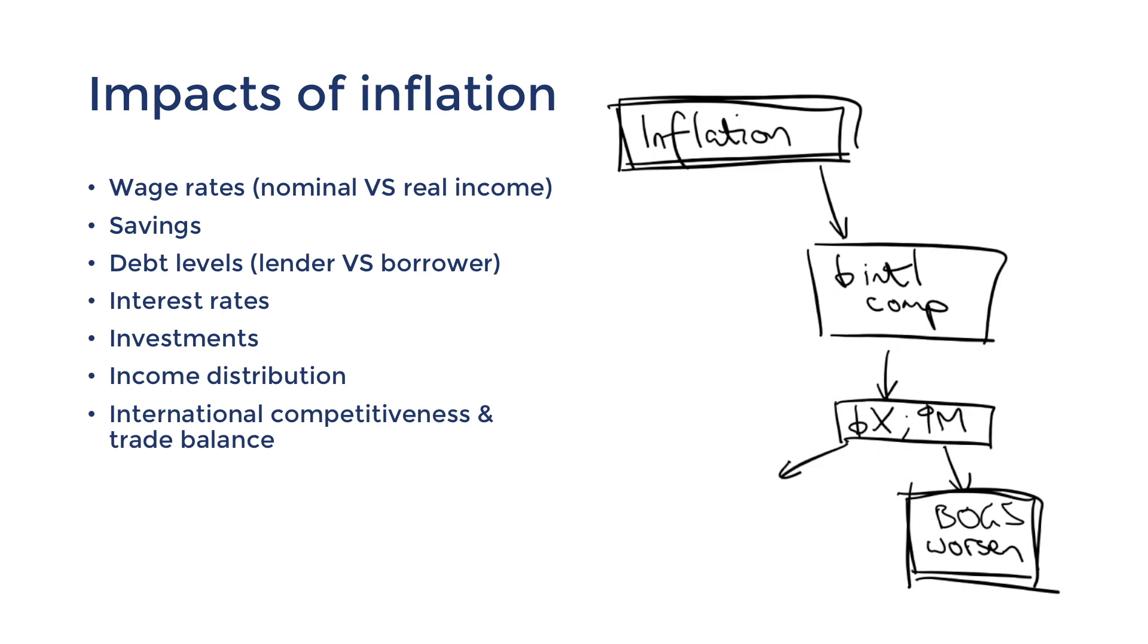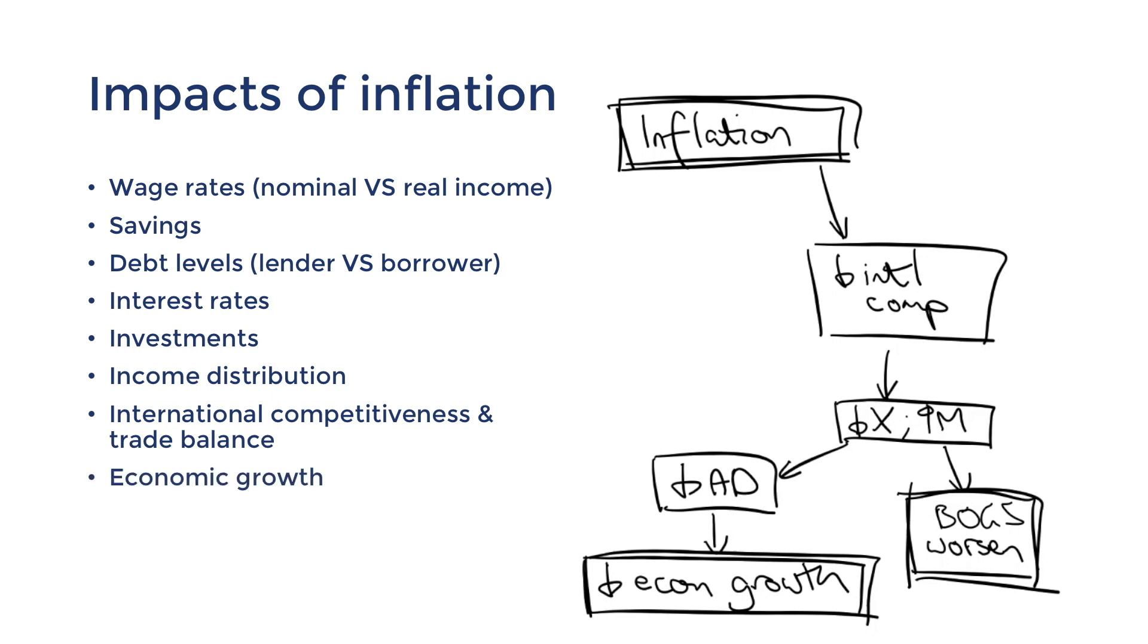Furthermore, this means that there will be more outflows than inflows in our net exports component of aggregate demand, leading to lower economic growth. As covered above, other components of aggregate demand such as investment could fall. Consumption may also be delayed. Governments are also likely to use contractionary fiscal policy along with monetary policy to curb inflationary booms. All of this leads to decreased aggregate demand and slower economic growth.